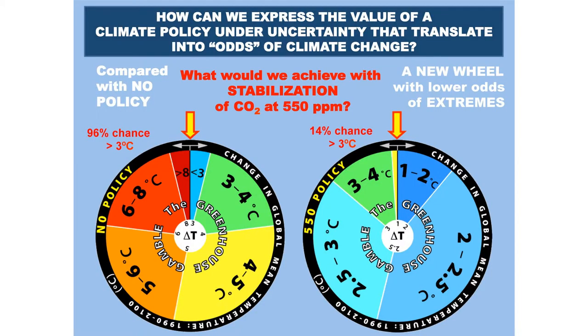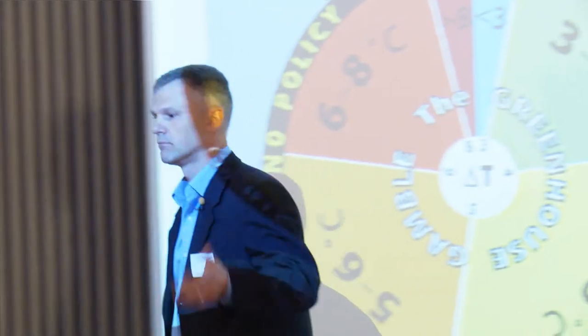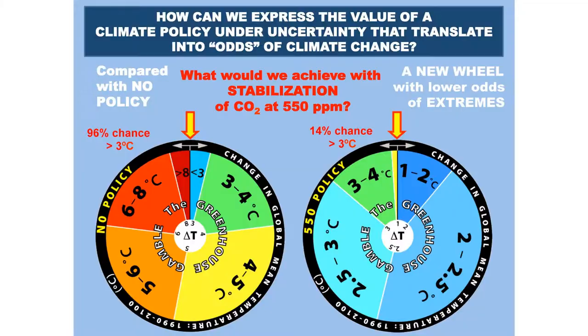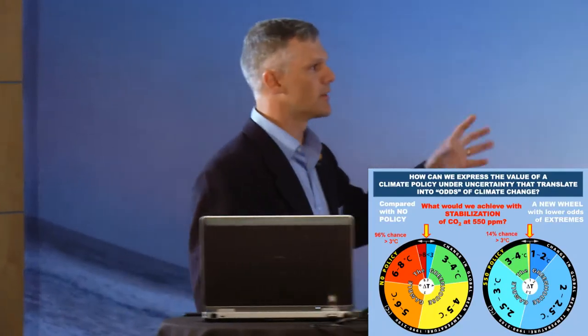From those frequency distributions, one thing we do is actually turn them into roulette wheels, and we ask people: if you don't want to do anything about climate, this is the wheel you have to spin for some amount of global warming to occur by end of century. Well, if you adopt a moderate stabilization policy — the level two policy — you get to spin that wheel instead. Which wheel do you want to spin? It's a gamble, it's a risk, and we found this a very useful and effective way to convey to the general public what's at stake and what the odds are.